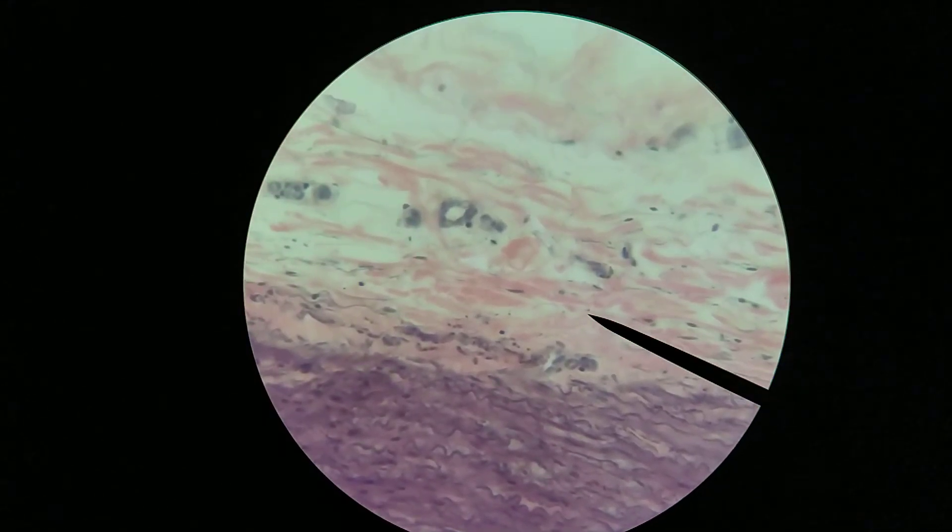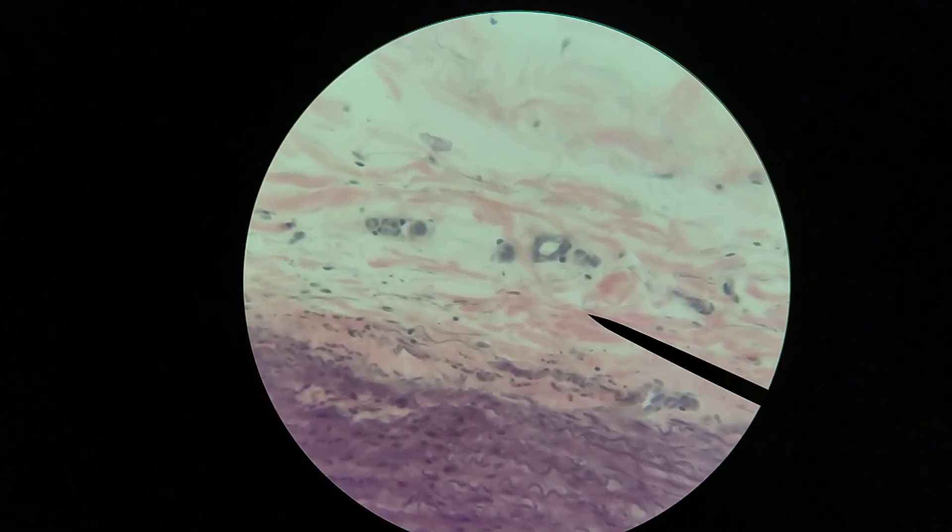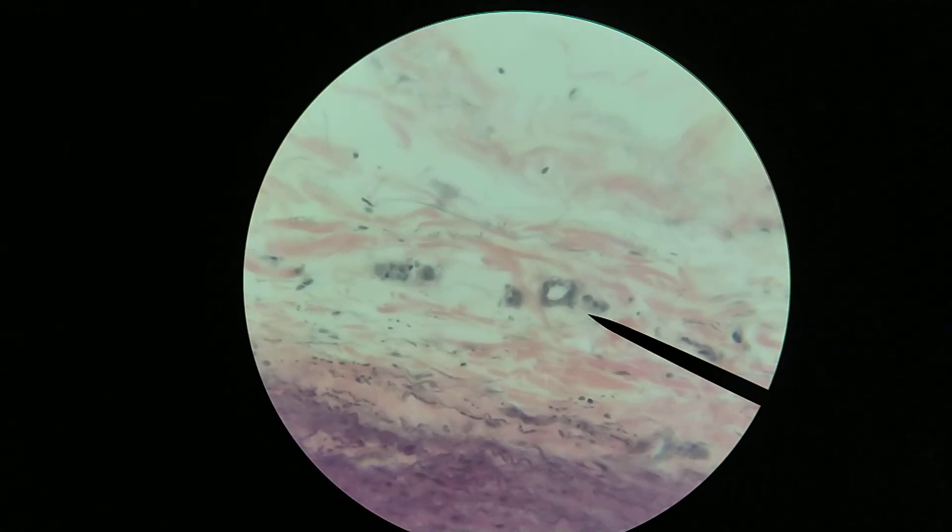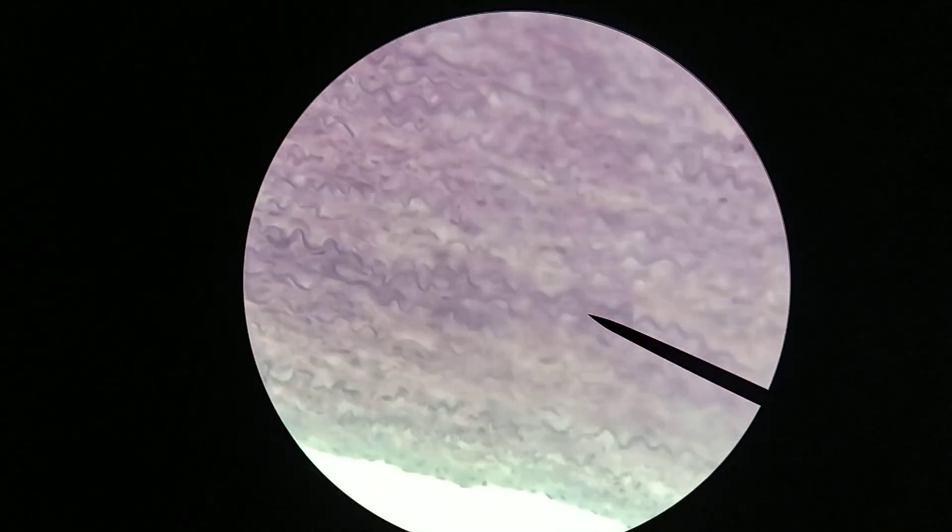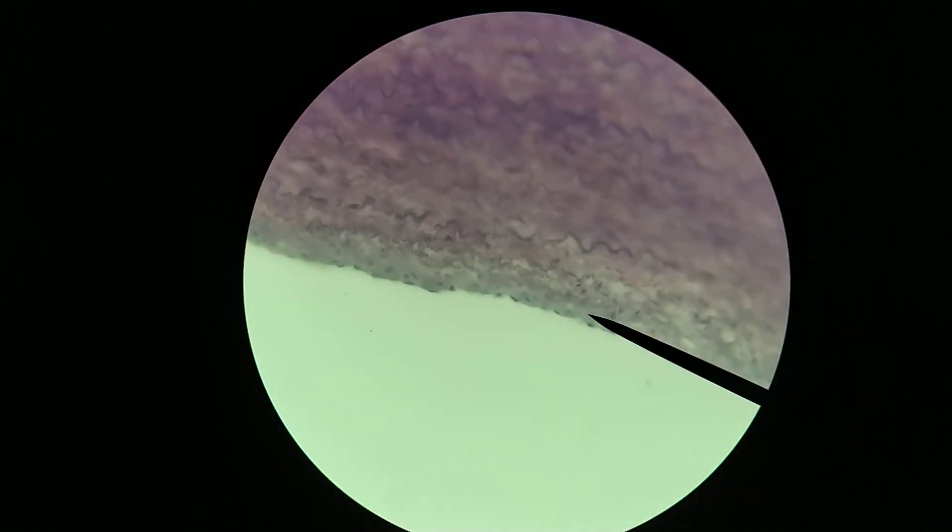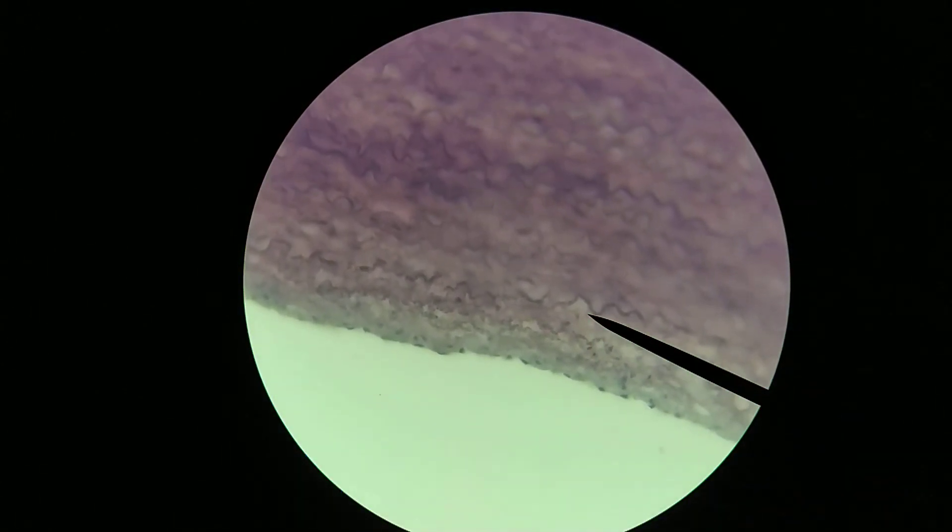So again, just because there's blood going through the interior of the lumen doesn't mean that that blood is going to be able to feed all these layers of cells around the outside. So you might have a few layers up here that might get fed from the lumen.